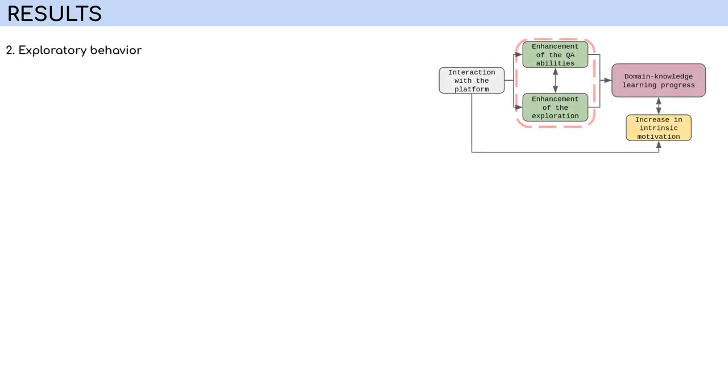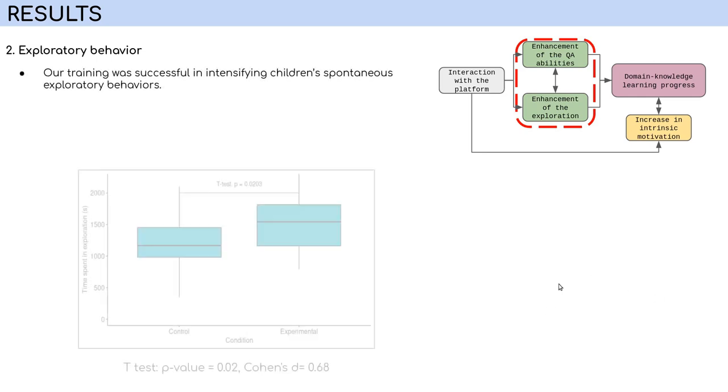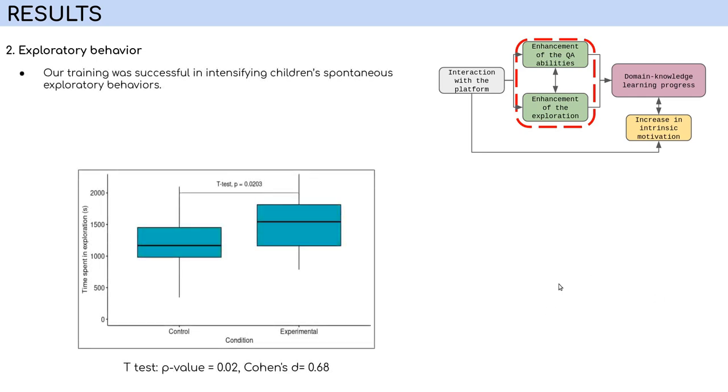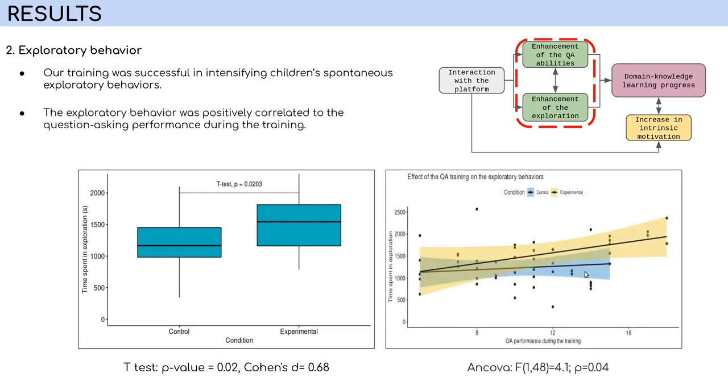Moving on to the time spent in exploration. This is a metric that reflects the number of resources that children were interested in seeing autonomously during their exploration. Since children were free to stop whenever they wanted, this also becomes a behavioral curiosity measure for us. As you can see, children from the experimental group were more successful in maintaining their exploratory behaviors and thus were more curious.